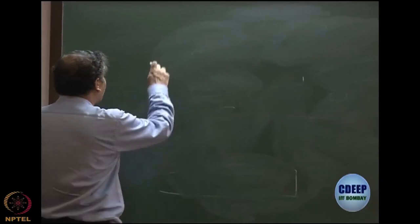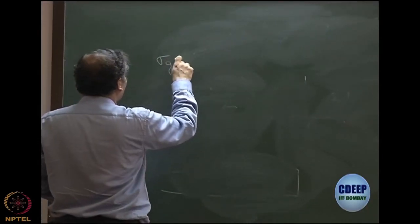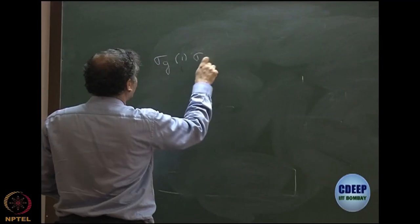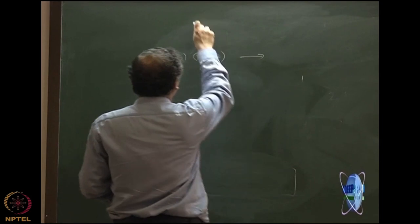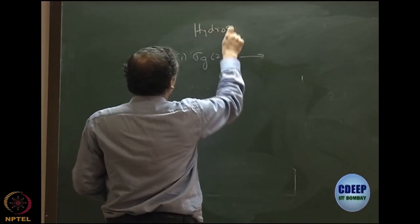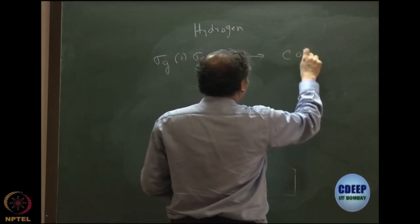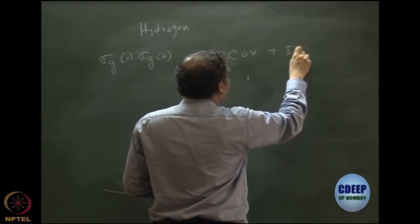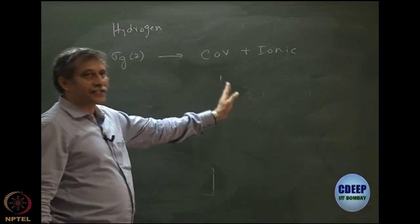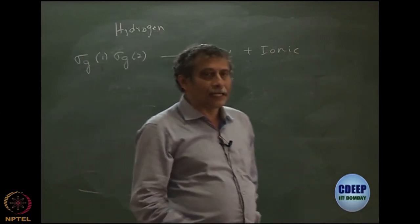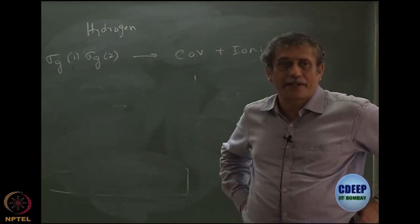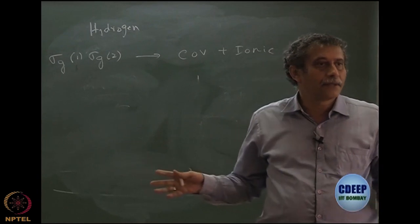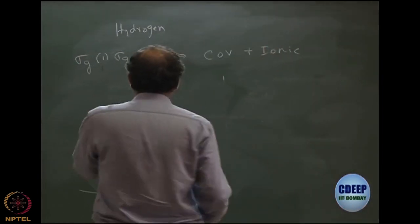We are discussing the hydrogen problem. If you have sigma_g squared, which is sigma_g1 times sigma_g2, the spatial part of the H2 molecule contains covalent plus ionic in equal measure. They are actually the same, and this leads to the problem that at the large dissociation limit, the results become bad and it does not go over to H plus H.